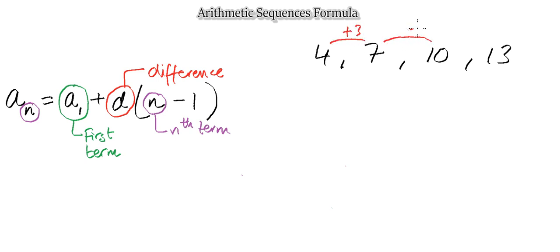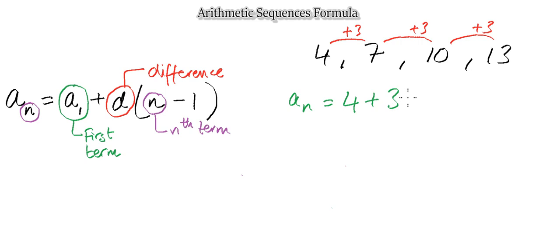The difference between consecutive terms is plus three throughout. Using the equation we have, let's form an expression. A sub n equals the first term, which is four, plus d — the difference, which is plus three — multiplied by bracket n minus one. The n stays as the nth term since we're just forming an expression.